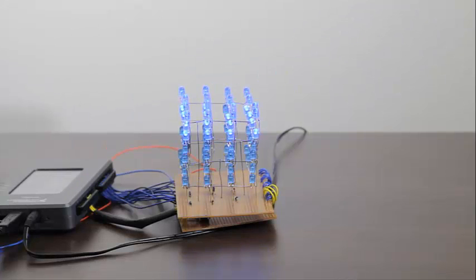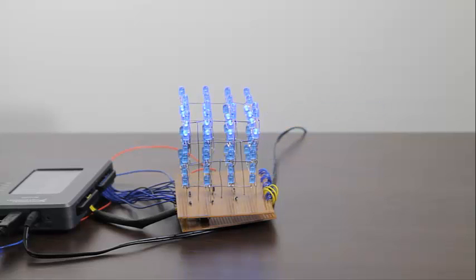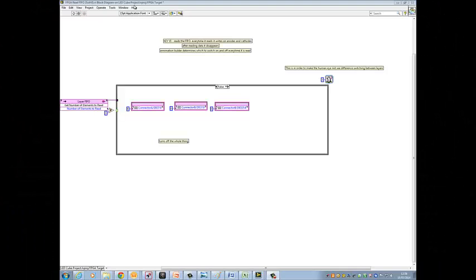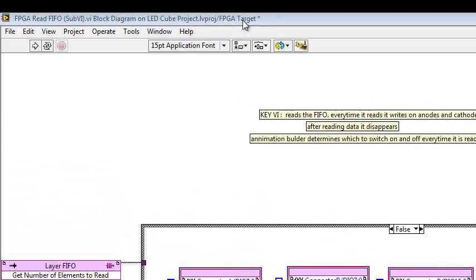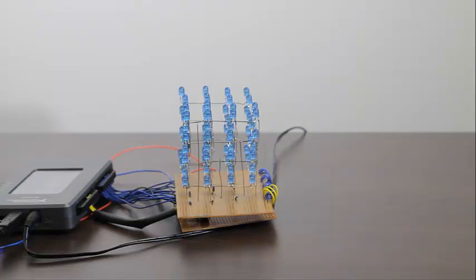Note that because of having only one cathode each, only one layer can be lit up all at once, and this creates major restrictions in performing advanced animations. The best solution is to put the theory of persistence of vision in practice. Making use of this theory, I have decided to switch each layer on and off so quickly that the human eye cannot spot it, and it appears as if all layers light up simultaneously, when in reality only one layer is lit up at one instance.